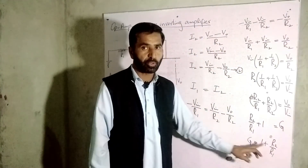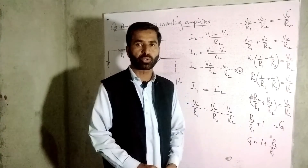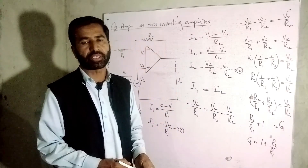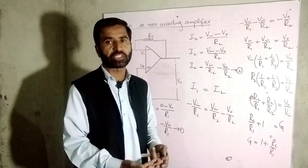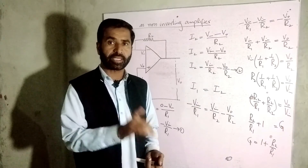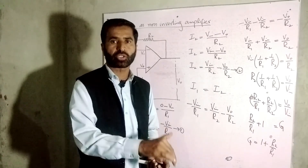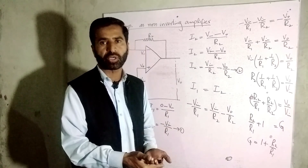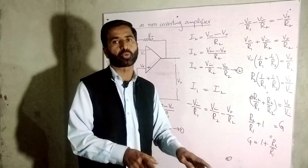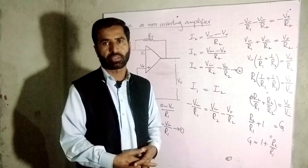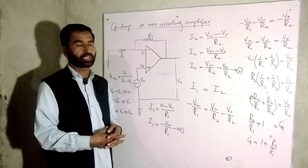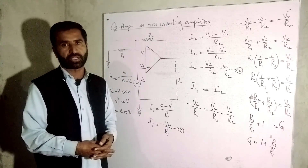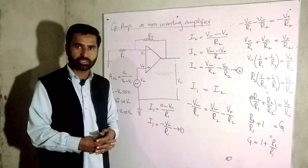The voltage gain has a positive value, which means the output signal is in phase with the input signal — the phase difference is zero. If the crest comes in, the crest goes out; if the trough comes in, the trough goes out. The signal is amplified and both input and output are in phase. This was our topic: operational amplifier as a non-inverting amplifier. See you in the next lecture. Allah Hafiz, thank you.